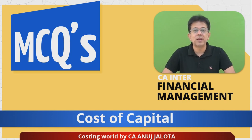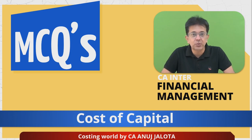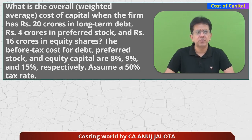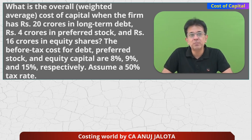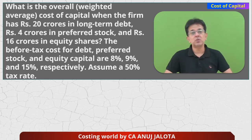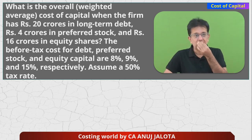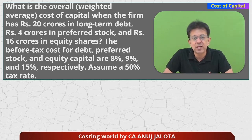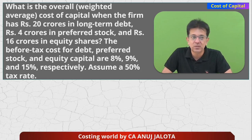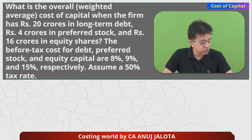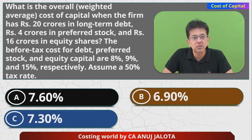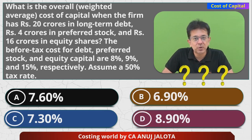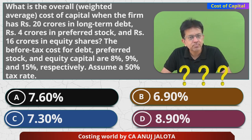Hi guys, welcome to CA Inter Financial Management MCQs. The chapter selected today is Cost of Capital. The question: what is the overall cost of capital when the firm has 20 crores in long-term debt, 4 crores in preferred stock, and 16 crores in equity shares? The before-tax cost of debt, preferred stock, and equity are 8%, 9%, and 15% respectively. Assume a tax rate of 50%. The four options are 7.6%, 6.90%, 7.3%, and 8.90%. Pick up your calculator, calculate, comment, then proceed.